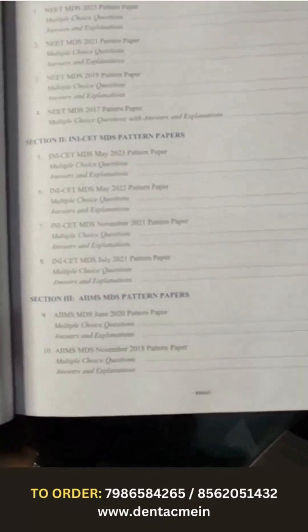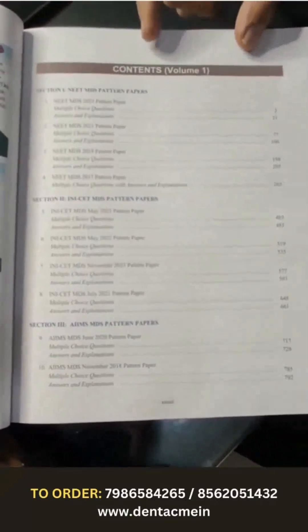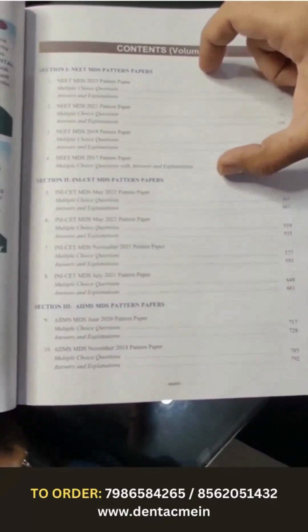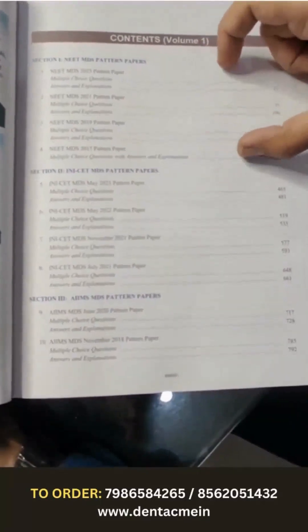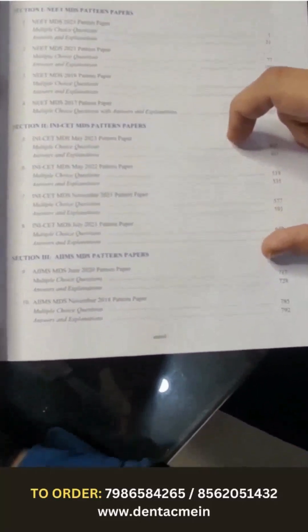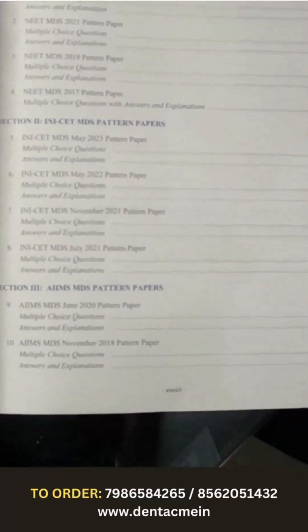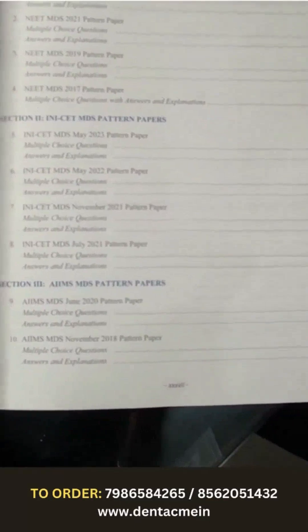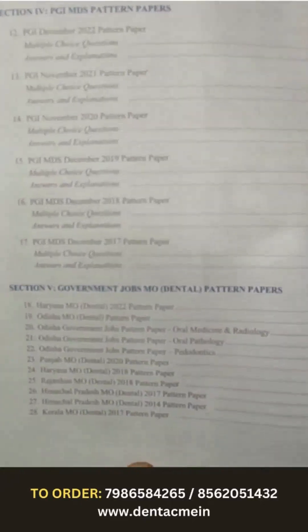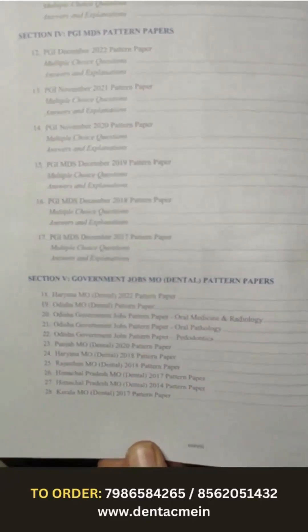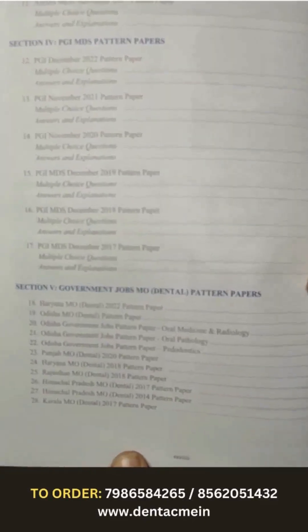The contents of Volume 1 are on this page. You have different sections. You have a NEET MDS pattern section in which four recent most NEET pattern papers are given. Then you have an INICET MDS pattern section — similarly, four papers based on INICET pattern are given here. Then you have AIIMS MDS pattern papers section. Section 4 is PGI MDS pattern papers, and section 5 is exclusively on government jobs MO Dental pattern papers.